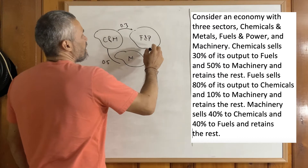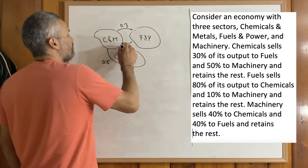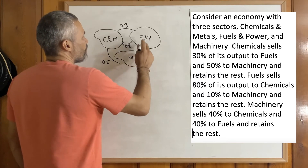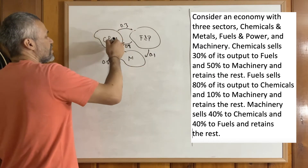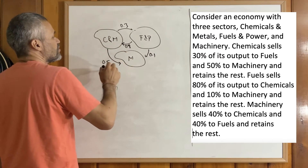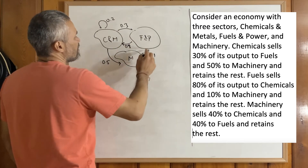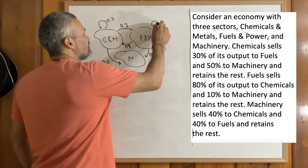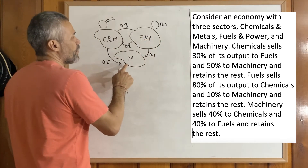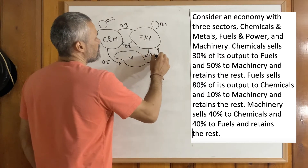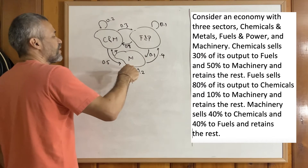We also know that 80% of the output of the fuels sector is used by chemicals, and 10% of the output of fuels is used by machinery — meaning 10% is used by the fuel sector itself. For machinery, we know that 40% goes to the chemicals sector, 40% goes to the fuels sector, and therefore 20% of the machinery sector's output is used by itself.